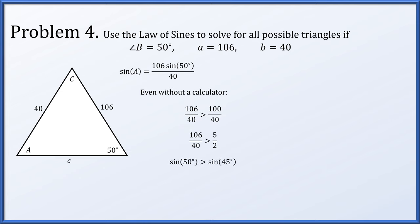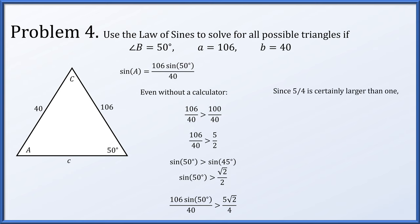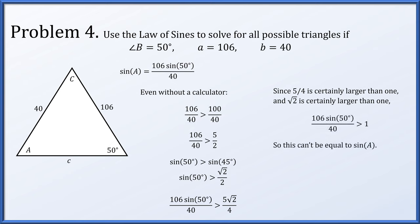Even without a calculator, we can see we were going to run into this problem. We have the ratio 106 over 40, which is a little bit bigger than 5 over 2. The sine of 50 degrees is a little bit bigger than root 2 over 2. So 106 times sine 50 degrees over 40 is a little bigger than 5 root 2 over 4, which is bigger than 1. You cannot have the sine of an angle be bigger than 1, so the sine value is impossible — there are zero solutions.